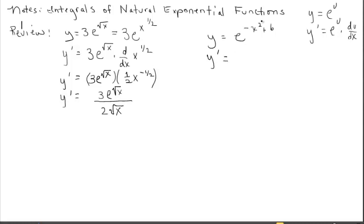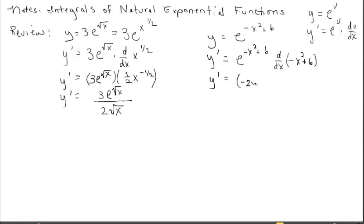For the second review problem, I've identified it as a natural exponential function and I'll apply the chain rule — e to the u — so the derivative is itself times the derivative of the exponent. The derivative of the exponent is negative 2x. So the answer is negative 2x times e to the negative x squared plus six. Parentheses are optional but look nice.